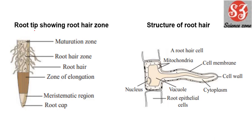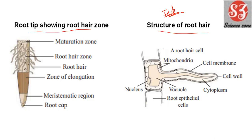Next is Chapter 6. The first important diagram is root tip showing root hair zone. This can come for a diagram question along with the structure of root hair. The structure of root hair is important because they can ask 'draw neat labelled diagram of structure of root hair' — so you should draw that.